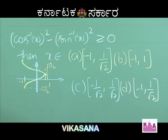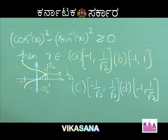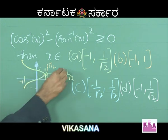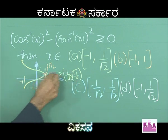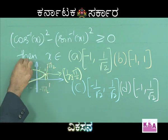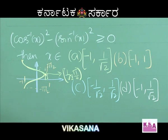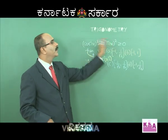This is where sin inverse of x equals cos inverse of x. To find this intersection point: cos inverse of 1 by root 2 equals sin inverse of 1 by root 2, both equal to pi by 4. So the intersection is at x equals 1 by root 2, with coordinates (1 by root 2, pi by 4). From minus 1 to 1 by root 2, cos inverse of x is greater than sin inverse of x; from 1 by root 2 to 1, sin inverse of x is greater than cos inverse of x.